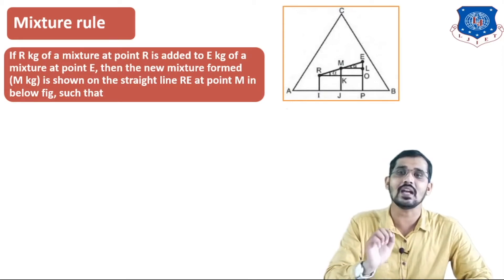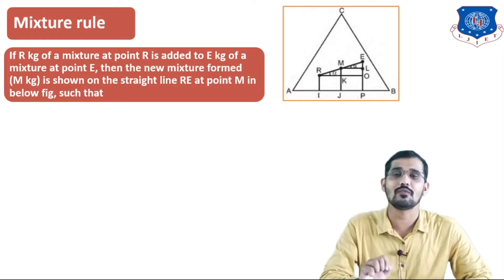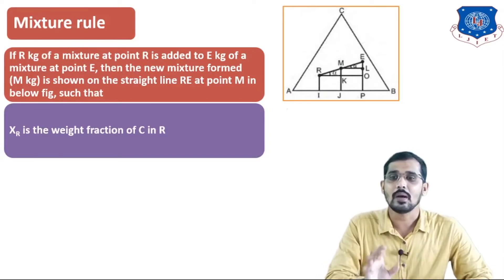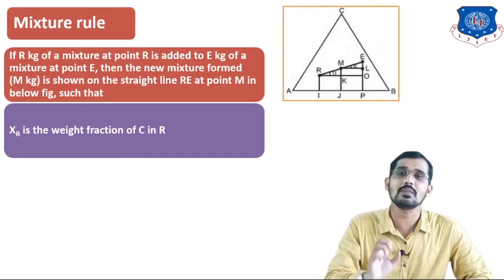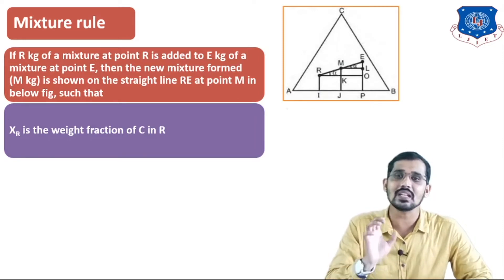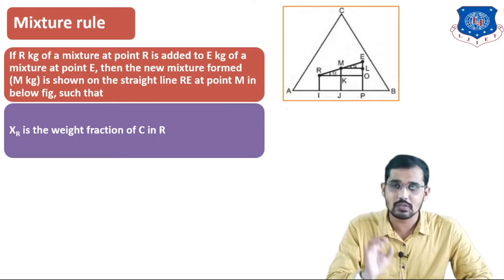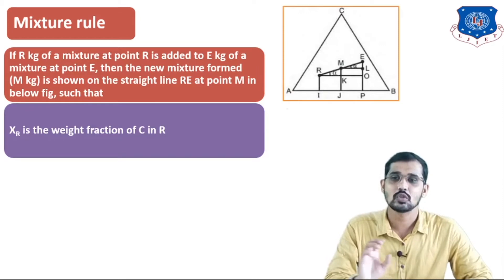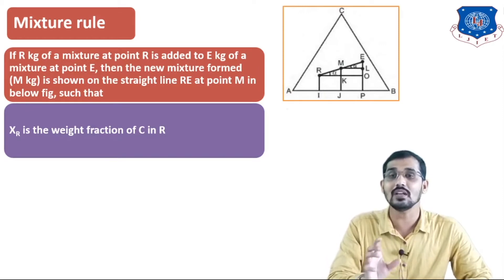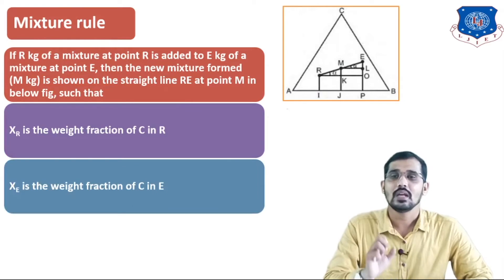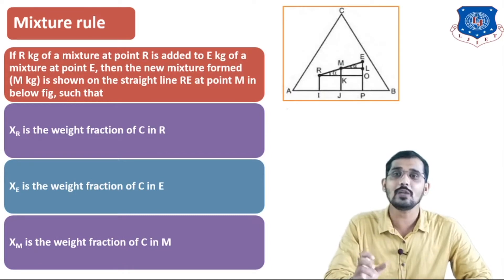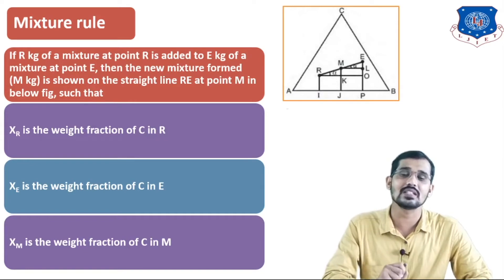M is shown on the straight line RE at point M in the figure. XR is the weight fraction of component C, which we want to remove from the feed solvent, in the raffinate phase — so XR is the weight fraction of the solute in the raffinate phase. XE is the weight fraction of the solute in the extract phase, and XM is the weight fraction of the solute in the mixture.